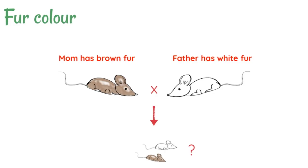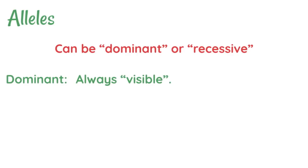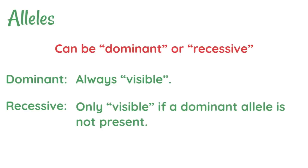Before we can answer that, we need a little more information about alleles. Alleles can be dominant or recessive. If an allele is dominant, that means it will always be visible. If an allele is recessive, it'll only be visible if a dominant allele is not present. Basically, the dominant allele will always be expressed over the recessive one, even if both are present.